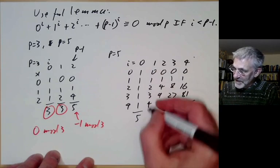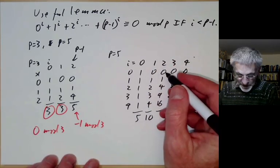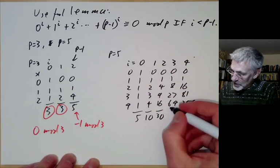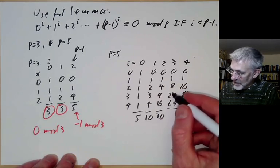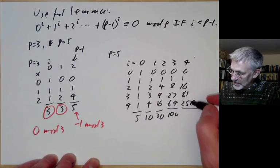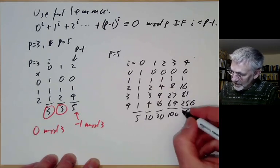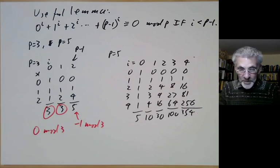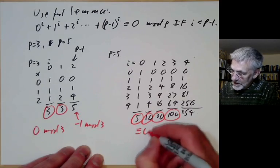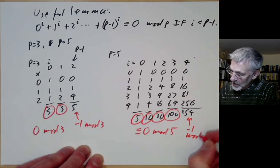The 0th powers we get 5. The first powers we get 10. The squares we get 30. Cubes we get 64 plus 27, that's 91 plus this one is 100. This one, the last digit is 4, we get 354. And just as before, these numbers are all congruent to 0 mod p, which is 5, and this one here is -1 mod p.